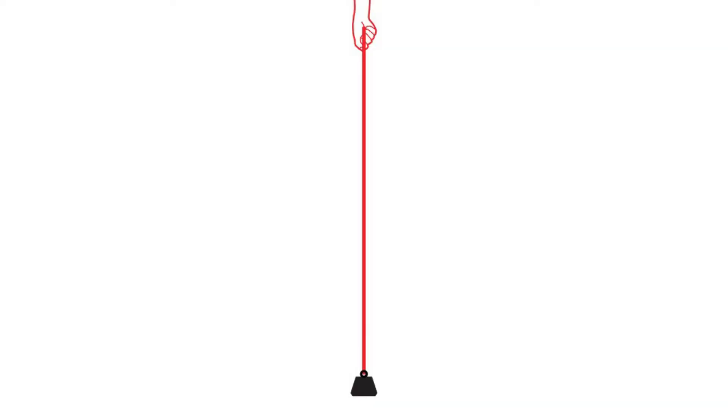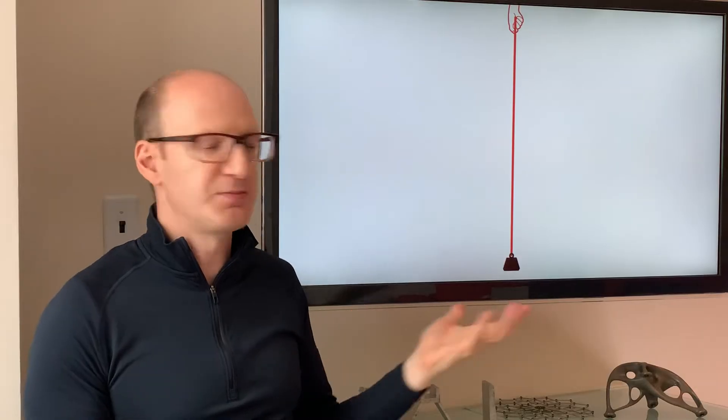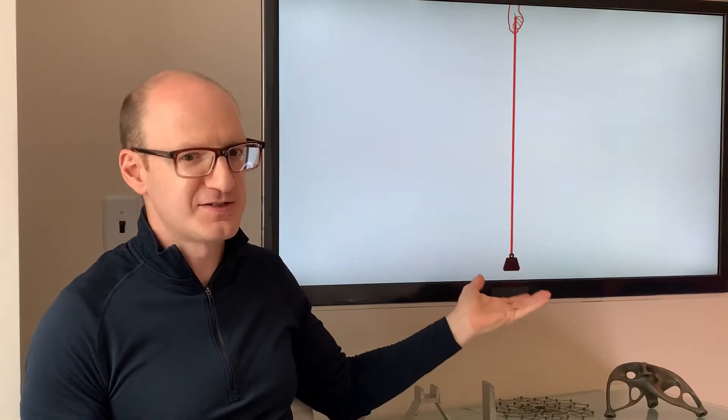So here we go, there's a vertical string, it's carrying a weight and there's a hand holding it up. The tension is the same all the way up the string, all the way up the cable. It has to be because the weight is the weight and the tension is equal to the weight. It's all balanced, all in equilibrium as we say.